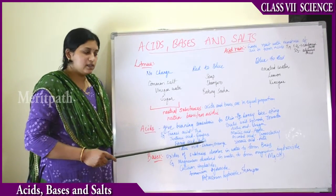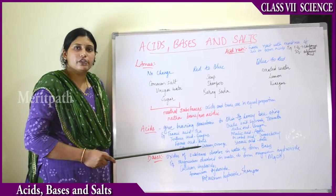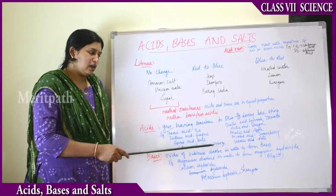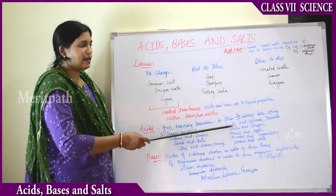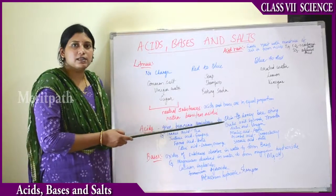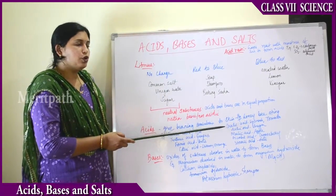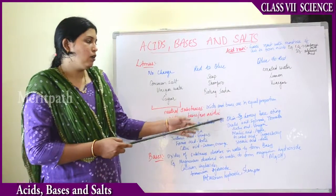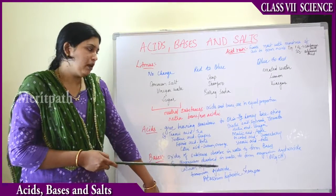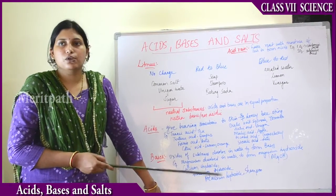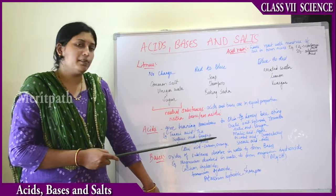Formic acid is released from ants. Citric acid comes from lemon and orange. Oxalic acid is present in spinach and tomato. Acetic acid comes from vinegar. Malic acid comes from apple. Ascorbic acid comes from gooseberry — it is a good source of vitamin C.